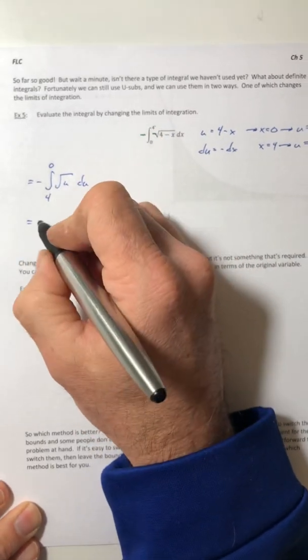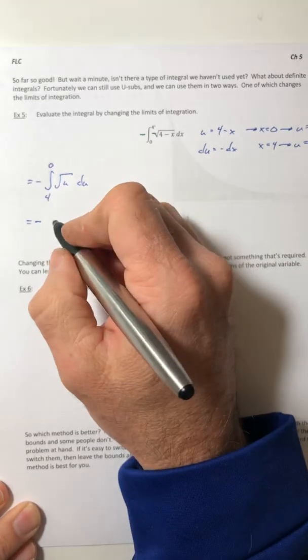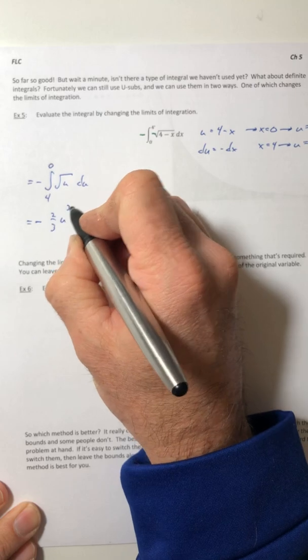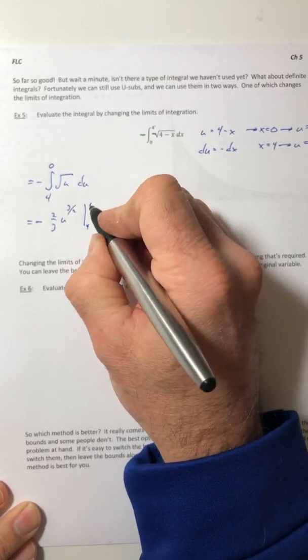Okay, so we need to integrate this. So the integral of root u, or u to the half, would be two thirds u to the three halves. And we're going to integrate from four to zero.